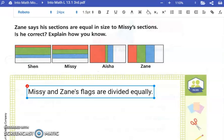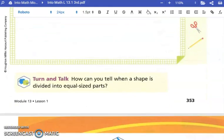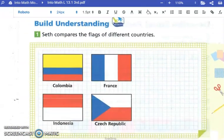What about Zane and Aisha's flags? Are they divided equally? No, they are not. We can see that. We can see on Aisha's flag that the red is a lot bigger than the blue and the green. And on Zane's flag, the green is much bigger.